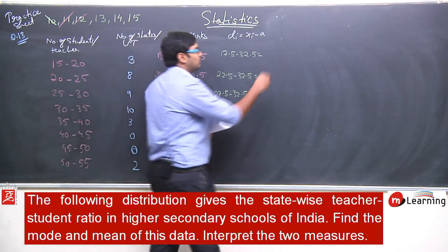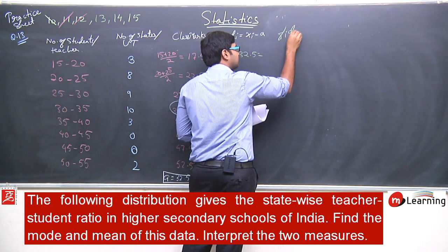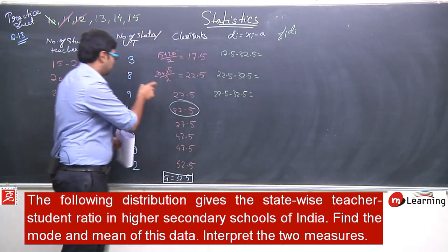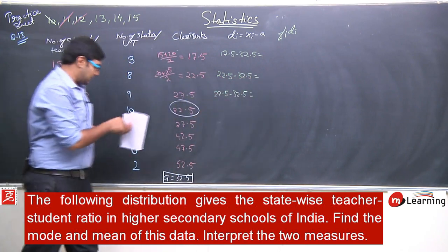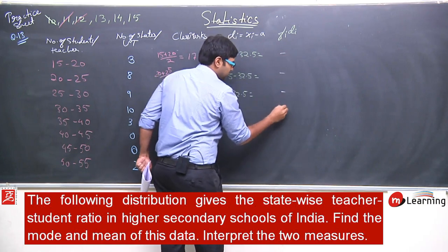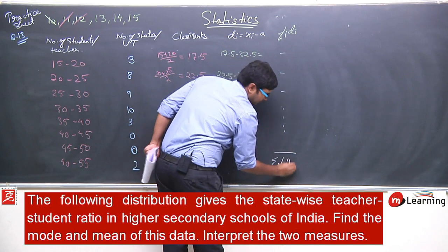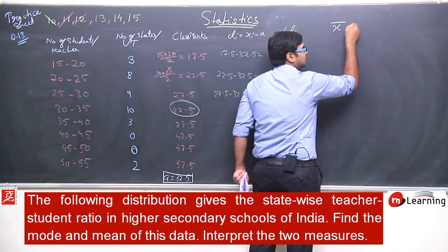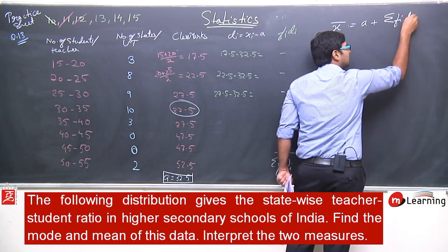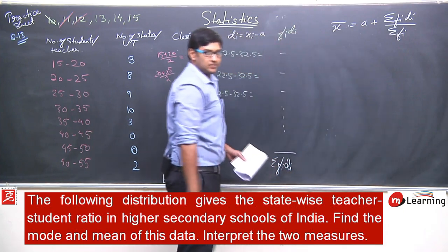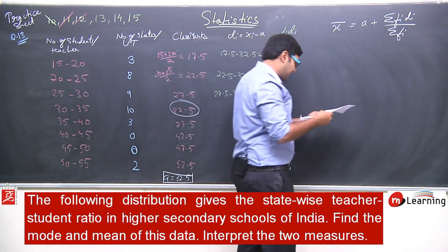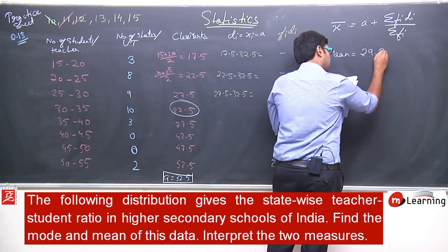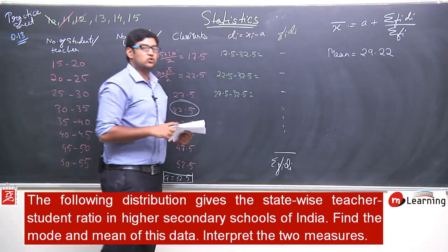After that, calculate f_i × d_i for each class — multiply each frequency by its corresponding deviation — and find the summation of f_i × d_i. Then apply the formula: mean = a + (Σf_i d_i) / (Σf_i). The mean value comes out to be 29.22.